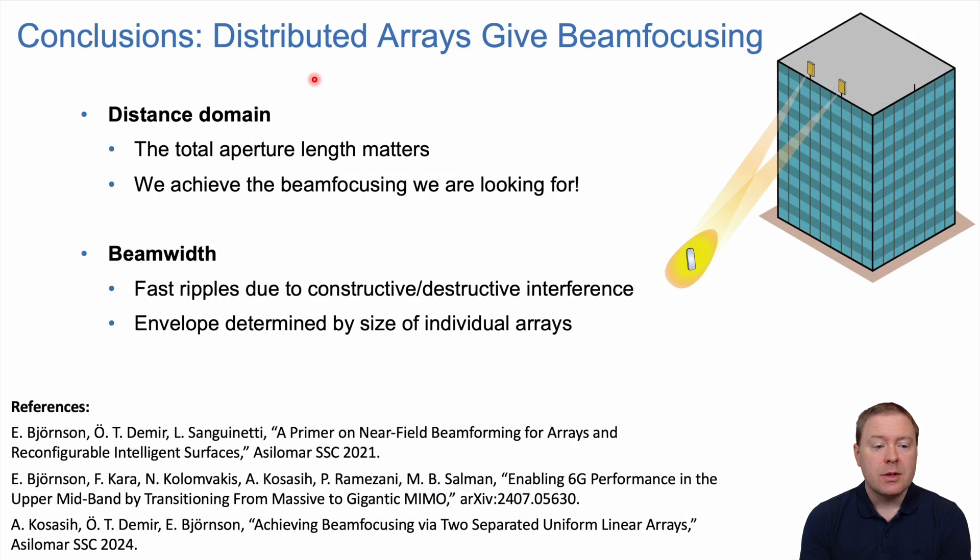In conclusion, we can use distributed arrays to create beam focusing. In the distance domain, the total aperture between outer parts of the two panels matters. We achieve the beam focusing we're looking for. The price for having a hole in our array is that beam width becomes complicated with fast ripples due to constructive and destructive interference between beams from two directions. This could be problematic in some scenarios, but with static users focused at the right places, it's fine. The envelope is determined by the beam pattern of a single array, and ripples are determined by the distance between the two arrays.